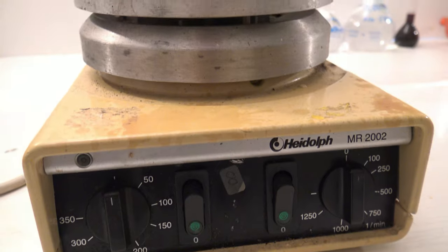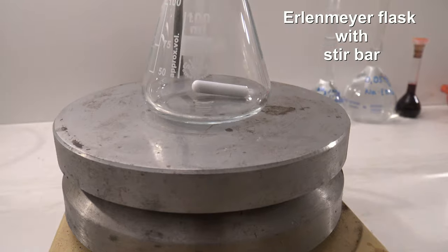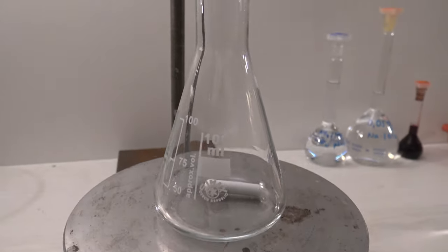For the titration, an Erlenmeyer flask with a stir bar is placed on a magnetic stirrer. Over the flask, a burette is placed.